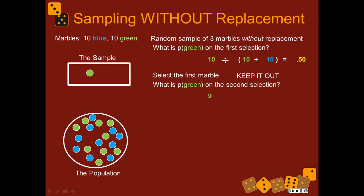There are only nine green marbles left but ten blue marbles left. So the probability now: we're interested in nine things that could happen — getting a green — divided by all the things that could happen. So nine divided by 19. It's actually slightly lower — it's 0.47 now.